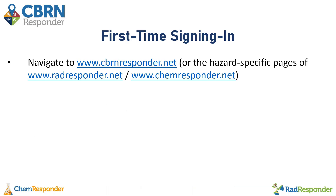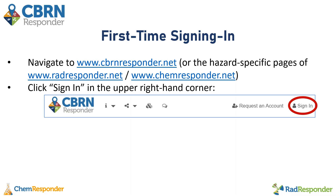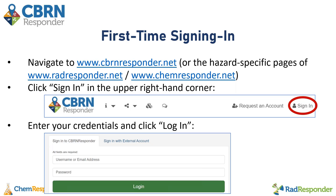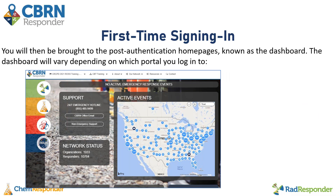You'll navigate to CBRNResponder.net or either of the hazard-specific pages of RADResponder.net and ChemResponder.net. You'll click Sign In in the upper right-hand corner, enter your credentials, and then click Log In. Once you log in, you'll be brought to the post-authentication homepages, which are known as the dashboards, and the dashboard will vary depending on which portal you log into.